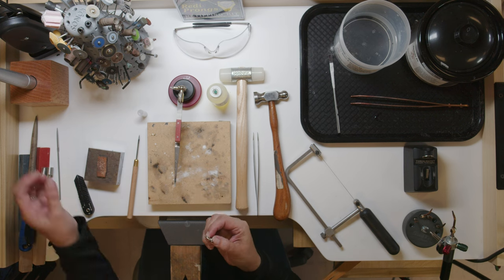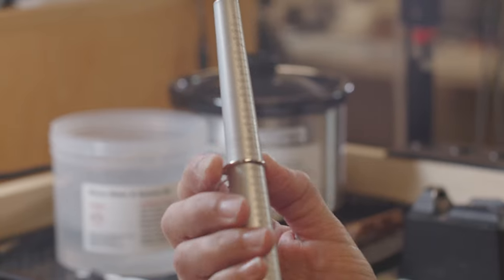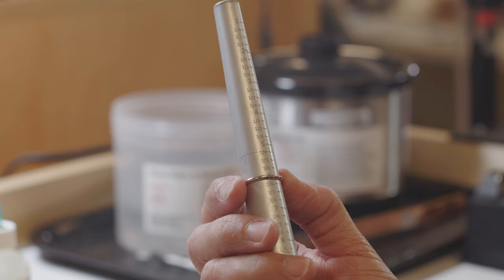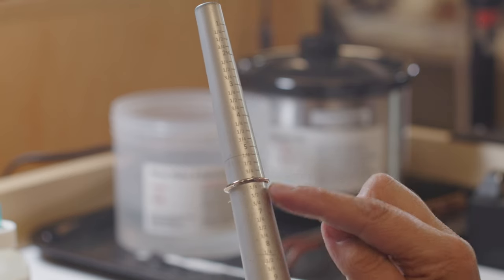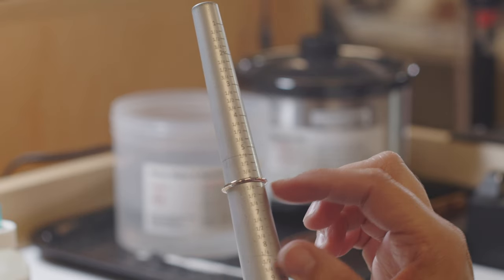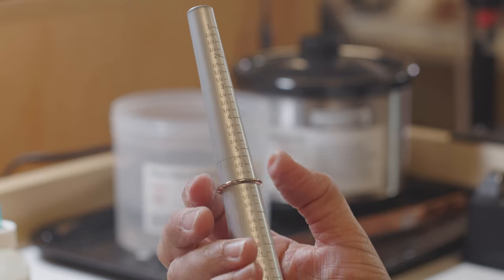Okay, so this one we're going to do a size down. You want to use your true size mandrel. Let's see, we are a six, let's do a five and three-quarter. You want to pay attention when you're using a mandrel and you put the ring on it. Pay attention to where the ring is falling because that's going to determine where you're going to cut your ring with the saw.